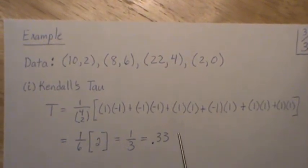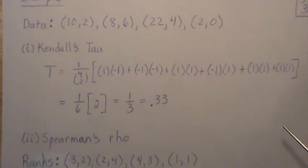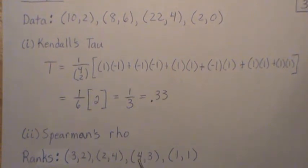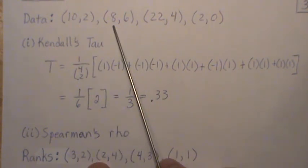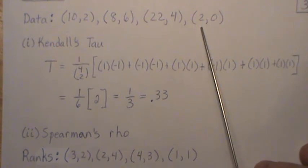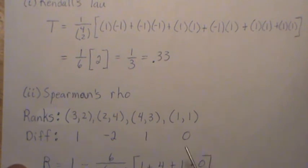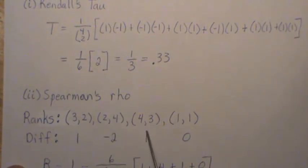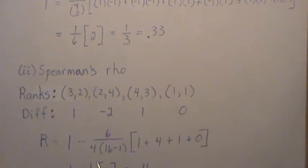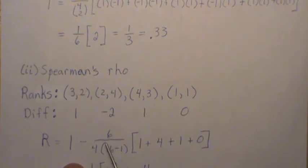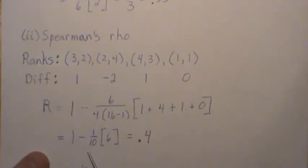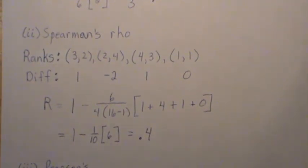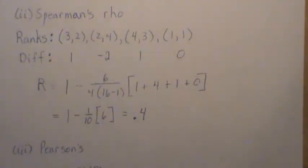Now let's compute Spearman's rho. We rank the X's — third, second, fourth, first — and rank the Y's, then take the differences between ranks: 1, 2, 1, 0. Spearman's rho = 1 − 6·Σd² / (n(n²−1)). The squared differences are 1, 4, 1, 0, summing to 6. So rho = 1 − 6·6/(4·15) = 1 − 36/60 = 0.4. Thus Spearman's rho is 0.4.